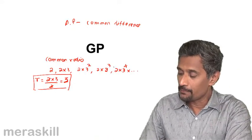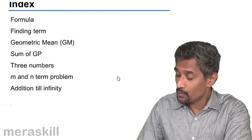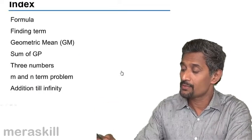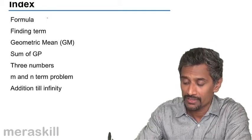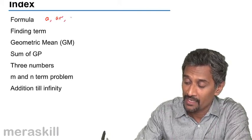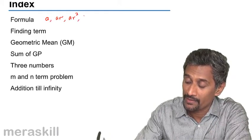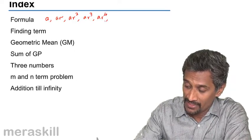So we'll be taking up this concept more in detail now. In the index, we're going to first take up the formula as to what a geometric progression is. So it will be of the form A. The second term will be AR, then AR squared, AR cubed, AR raised to 4.